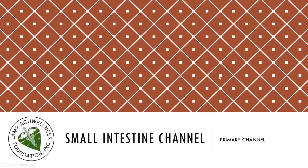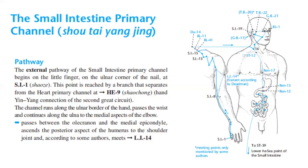Let's discuss the small intestine primary channel. The external pathway of the small intestine primary channel begins on the little finger on the ulnar corner of the nail at SI1.